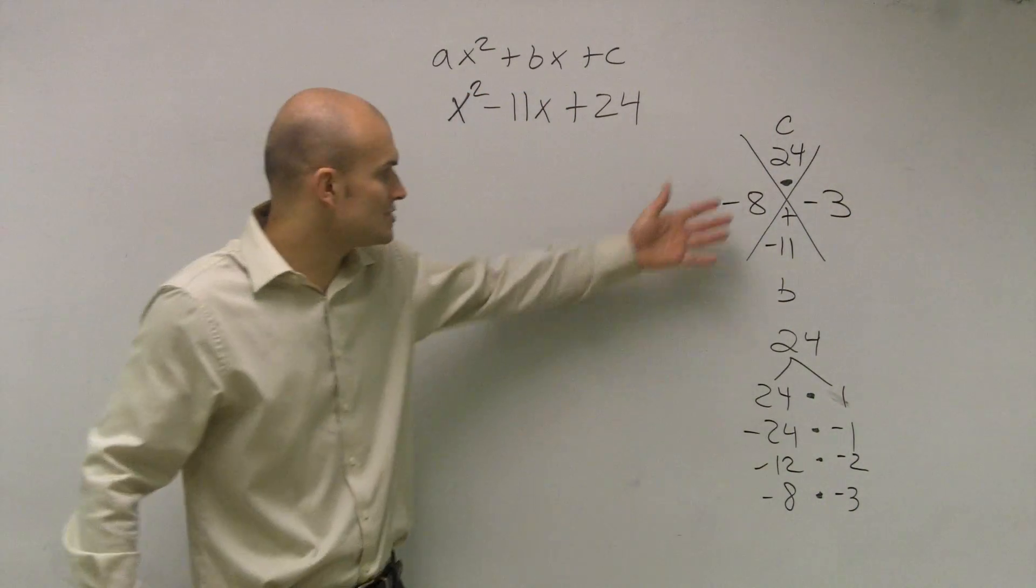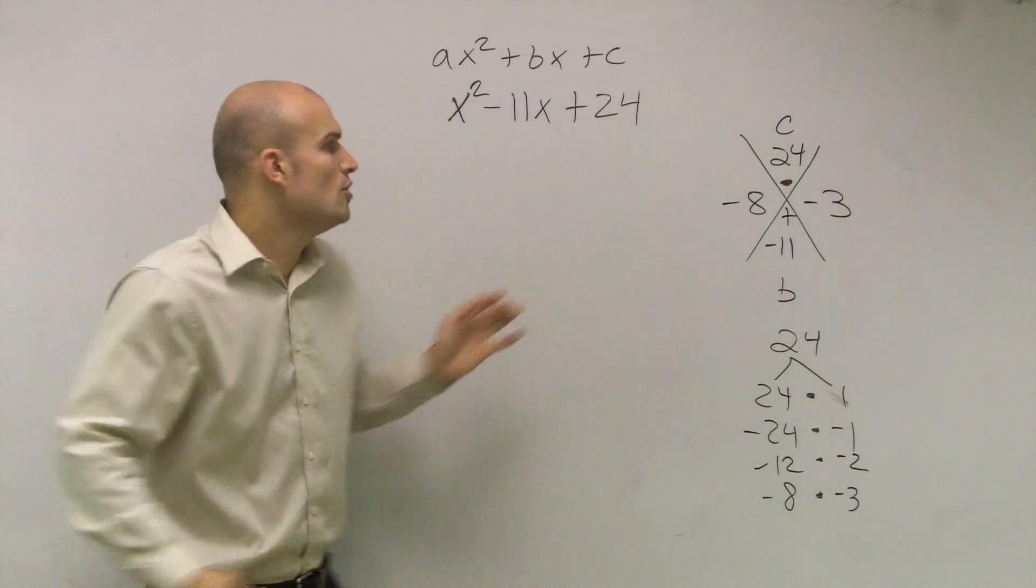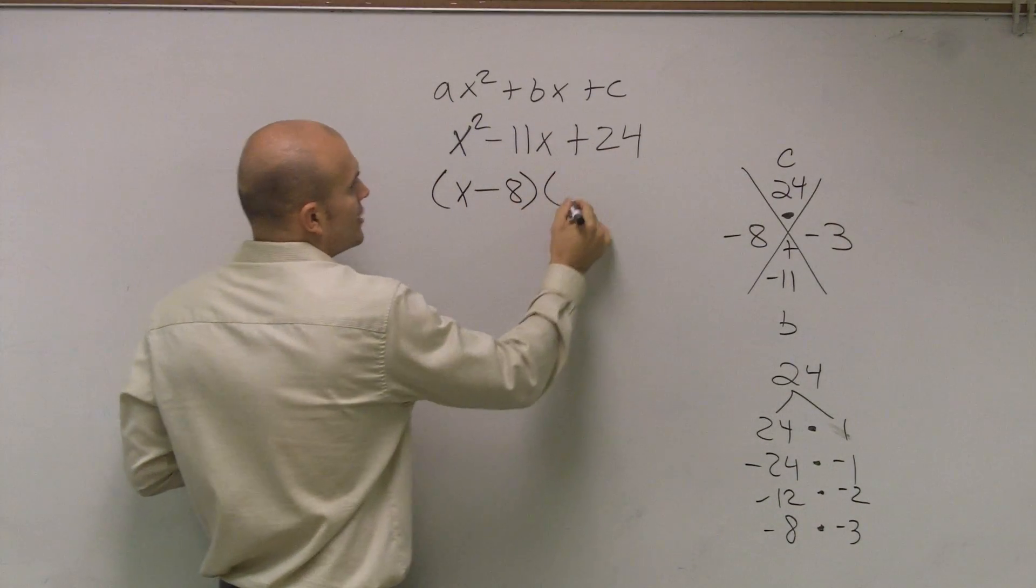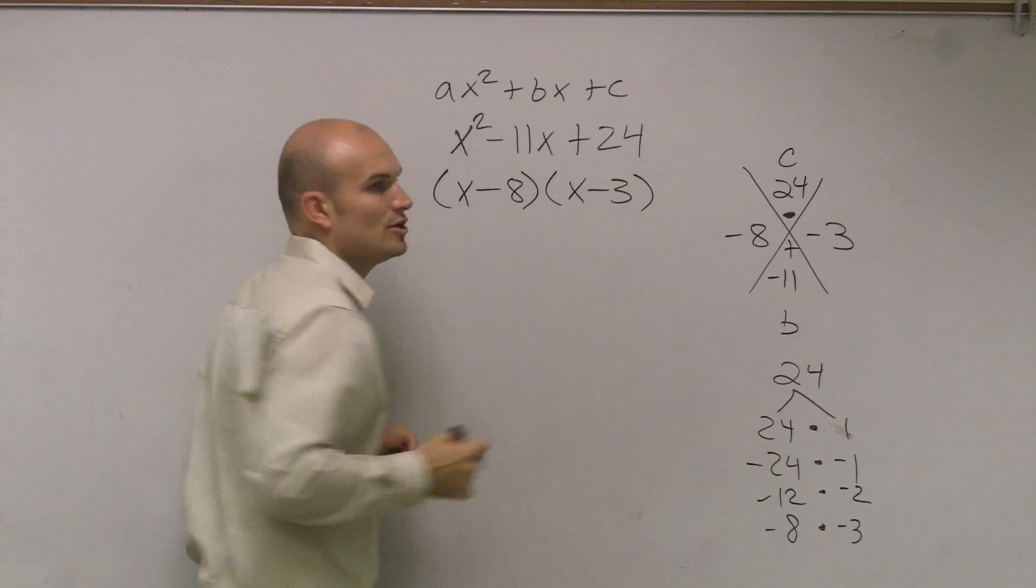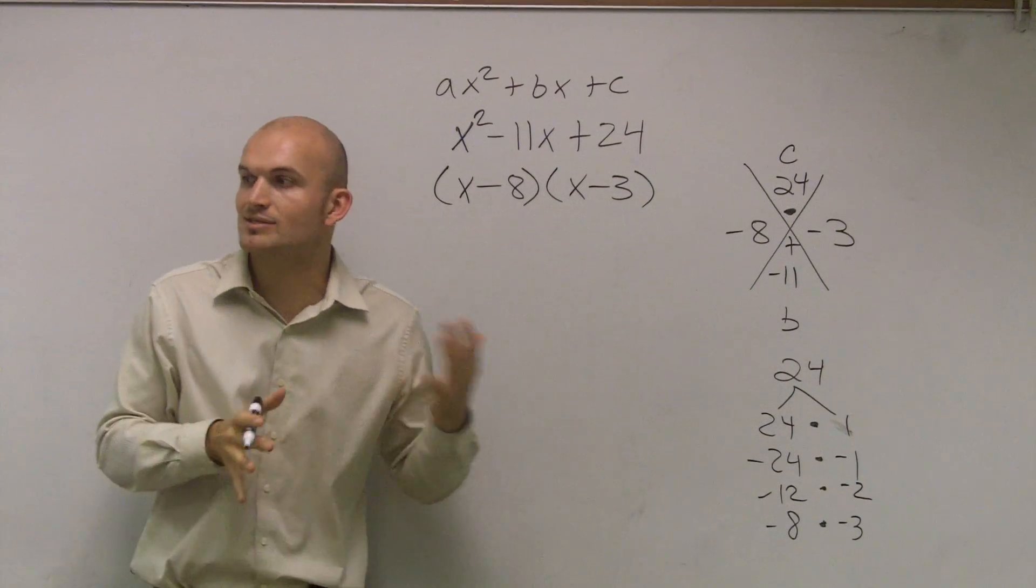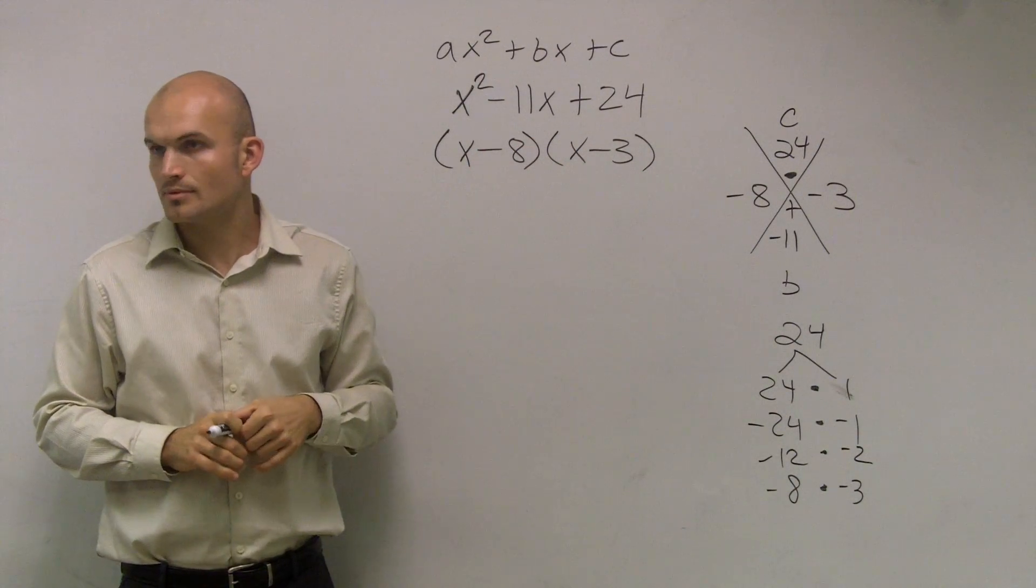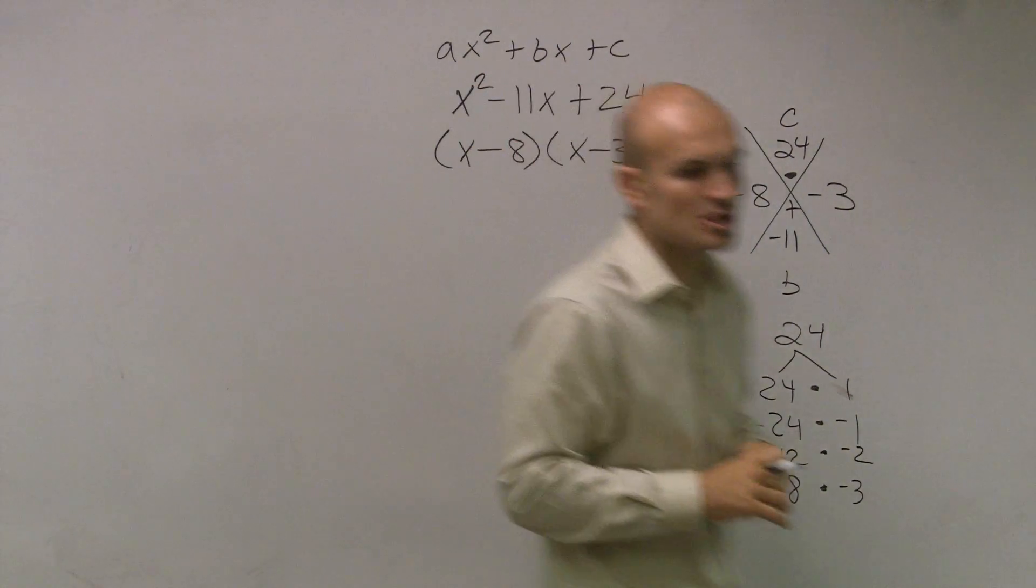But remember, why are we doing this? We're not doing this so we can divide up these two numbers. We want to create a binomial minus another binomial, and that is part of that factor method. So make sure for these problems that we put it as our factors. All right? And that's how you solve it.